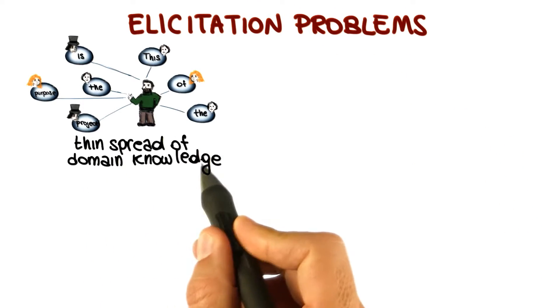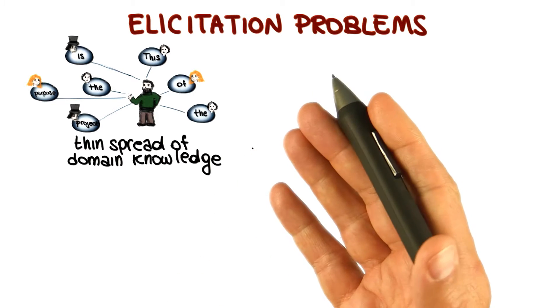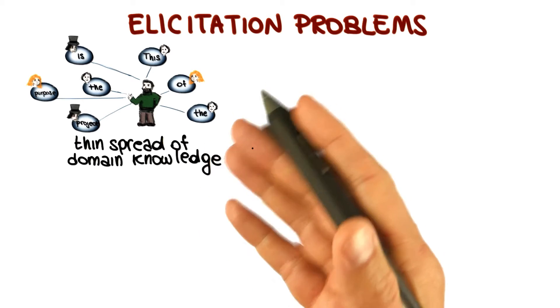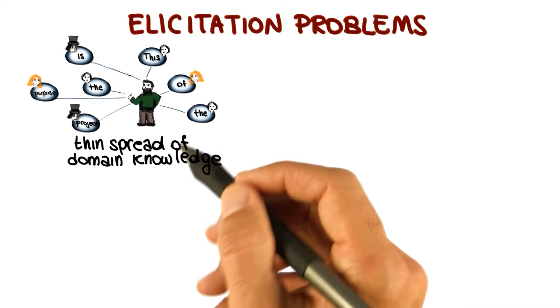One first problem is the thin spread of domain knowledge. Knowledge is rarely available in an explicit form. That is, it is almost never written down. Moreover, knowledge is often distributed across many sources.